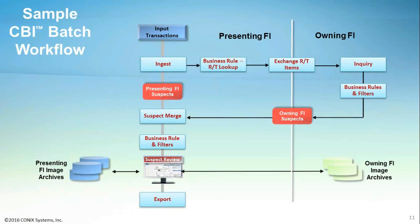The presenting bank merges these suspects with the suspects drawn on its own accounts and applies its own business rules and filters for automatic dispositioning. The remaining suspects are reviewed and dispositioned by its operators. During suspect review, optionally, the detective system can retrieve images of matching items directly from the owning bank's image archives and retrieve images for any on-us items from its own repositories. The disposition codes for each suspect are sent back to the designated system for final resolution, resulting in either the item going forward in the normal collection process, being removed from downstream processing and charged back to the depositor, or a hold being placed on the funds for the depositing account.